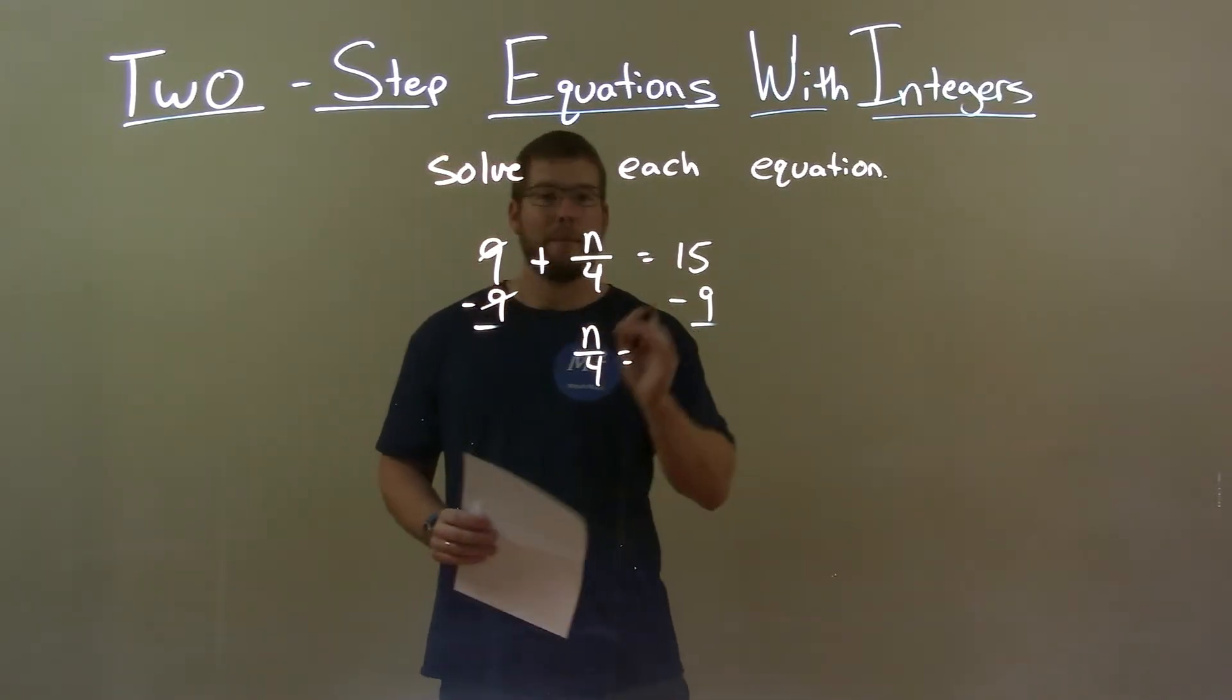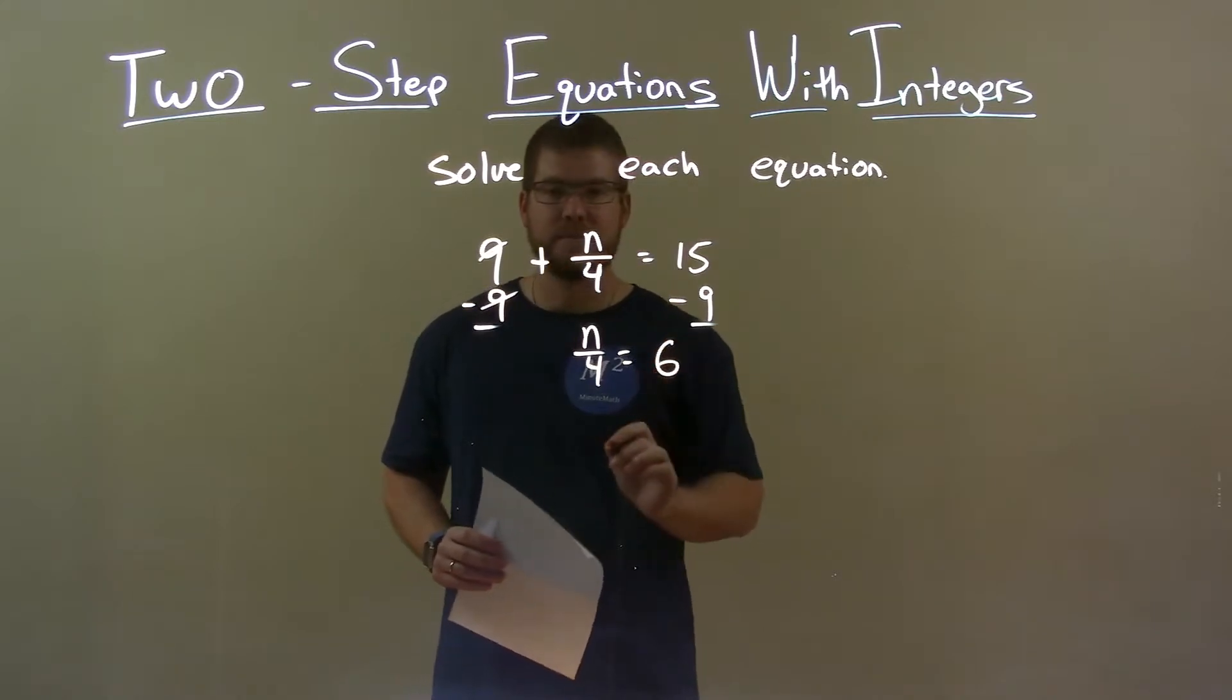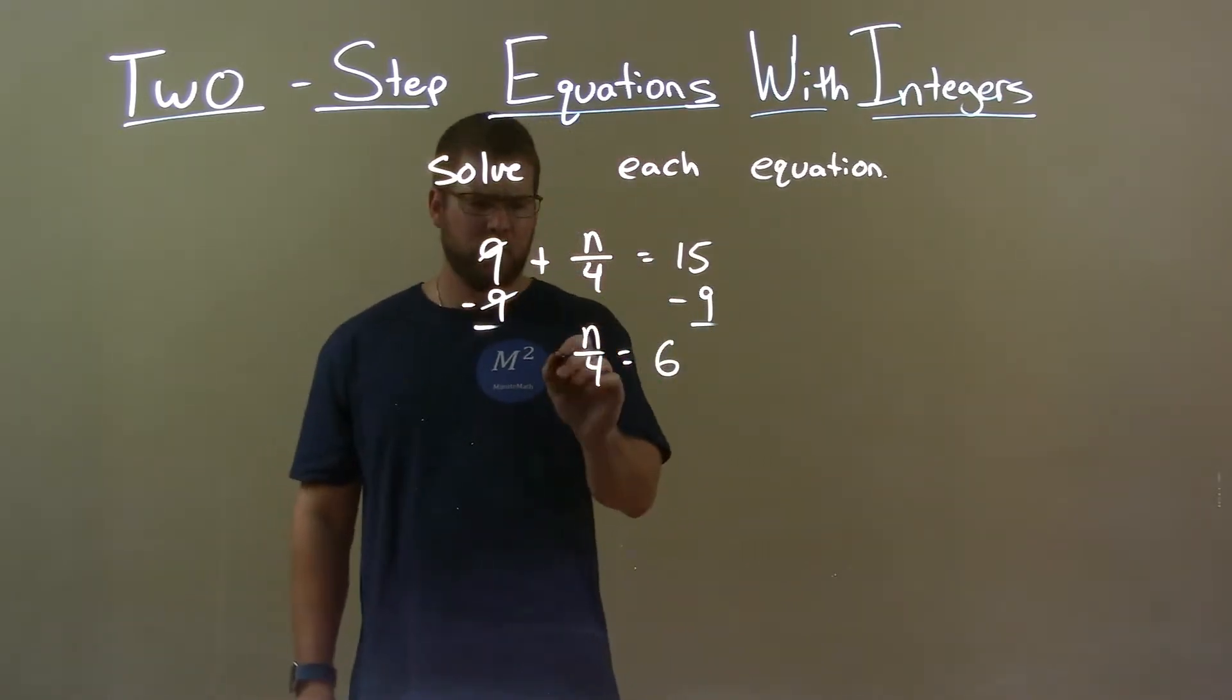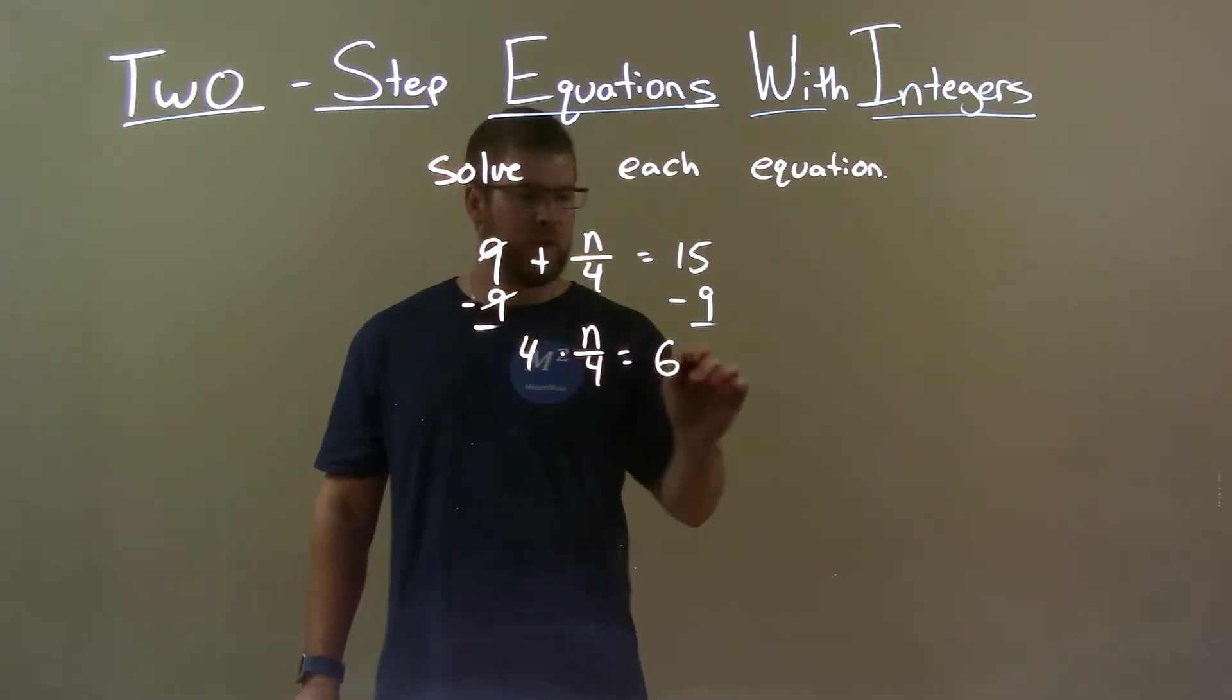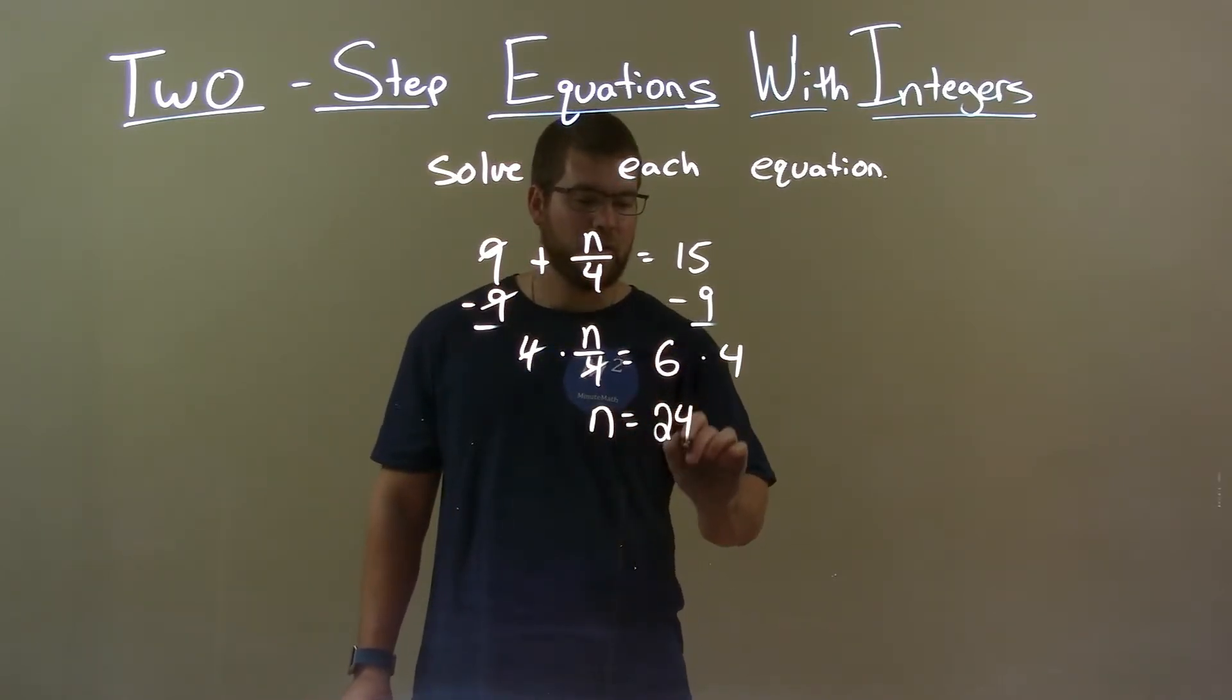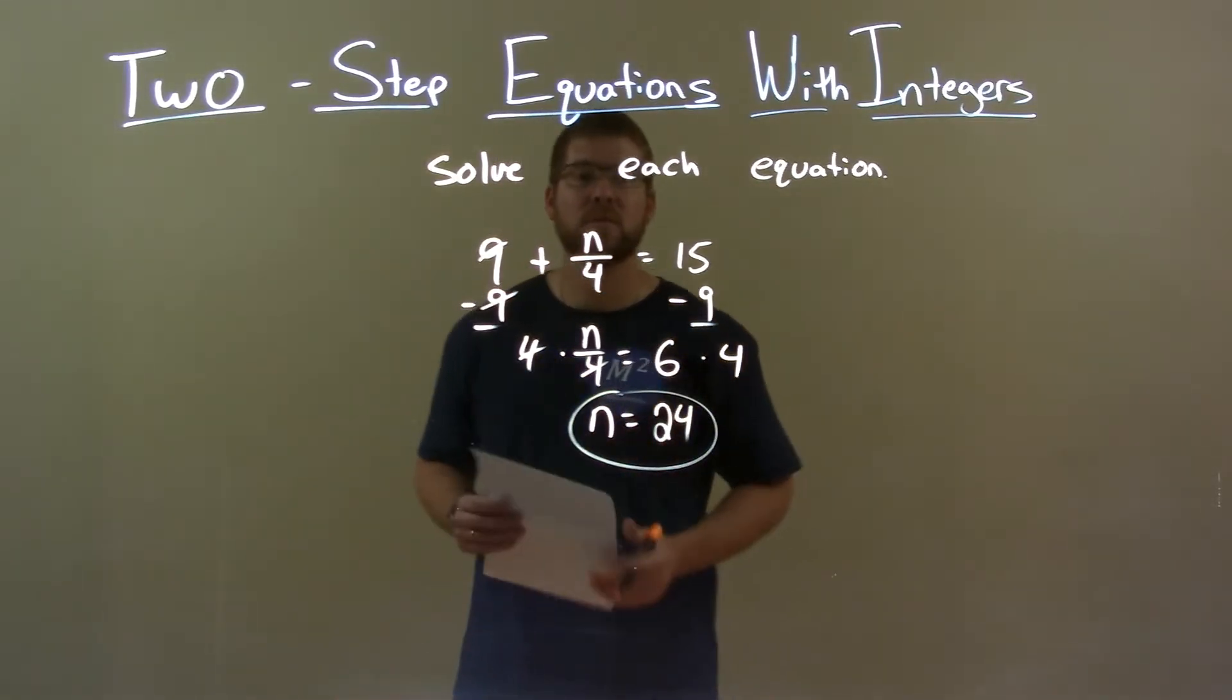Now, 15 minus 9 is 6. So, n over 4 equals 6 now. Well, we're divided by 4, opposite of division is multiplication. Multiply both sides by 4. That gives me n by itself and 6 times 4 is 24. So, my final answer is n equals 24.